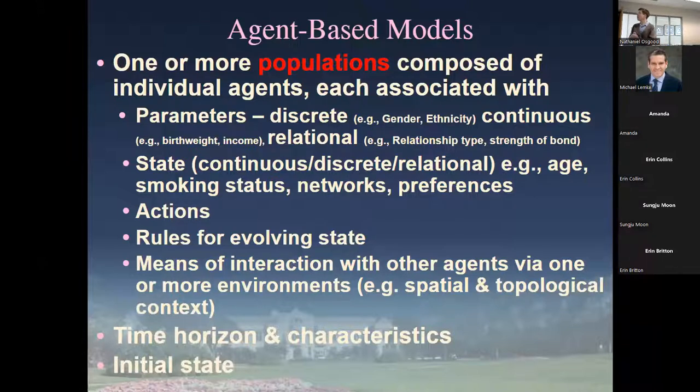The characteristics of agent-based models. Agent-based models consist of one or more populations composed of individual agents. We call them agents - they're individual actors, autonomous from each other at some level. That doesn't mean totally independent, but that they can differ and evolve over time.